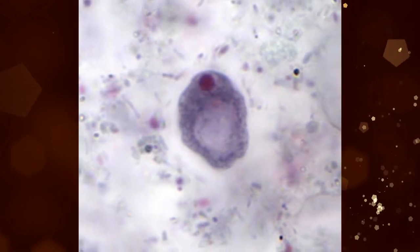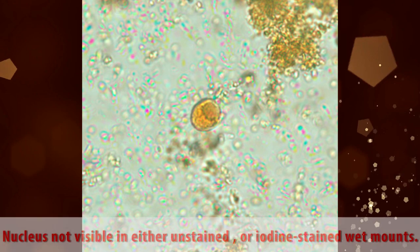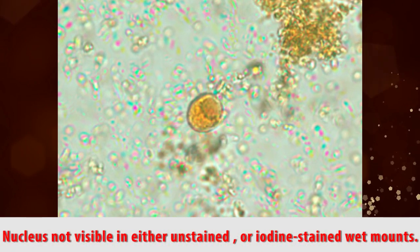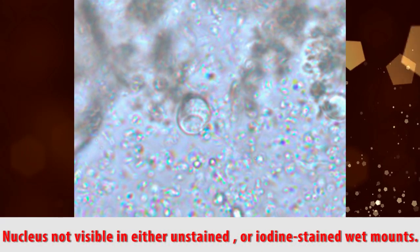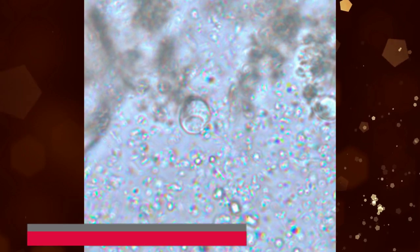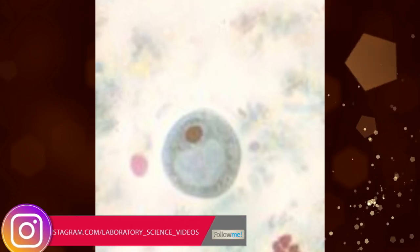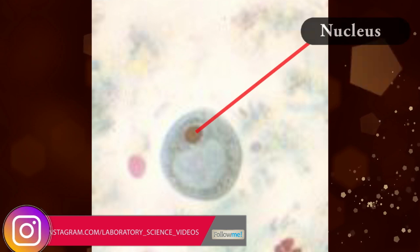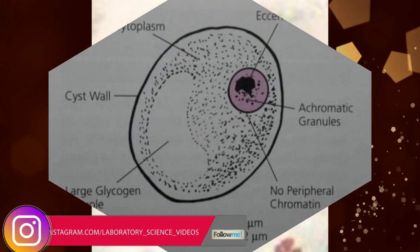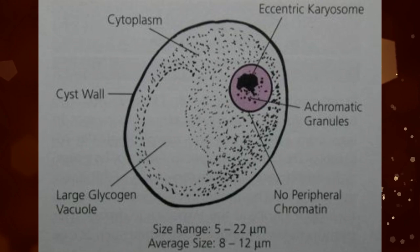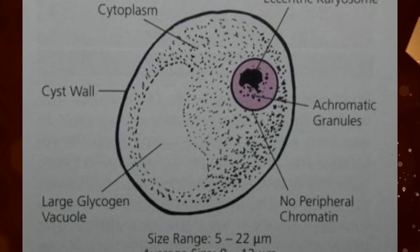Cysts contain almost always a single nucleus that is not visible in either unstained or iodine-stained wet mounts. With permanent stains such as trichrome, the nucleus is visible and contains a large, usually eccentric karyosome. Achromatic granules may or may not be present around the karyosome.